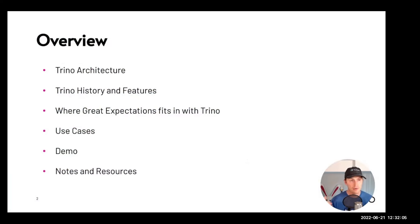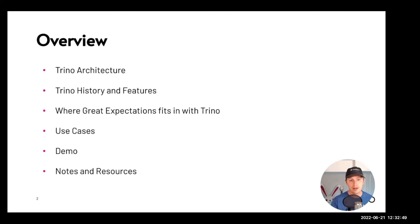Let's go through the quick overview of how we're going to go through this talk. First I'm going to cover Trino architecture — a top-level view giving you the basic idea of what Trino is. Then we'll talk about the 'why' — take a step back and go through a bit of the history around Trino, mentioning features that developed along that history. Then we'll cover where Great Expectations fits into that narrative, a couple of use cases, and finally notes and resources.